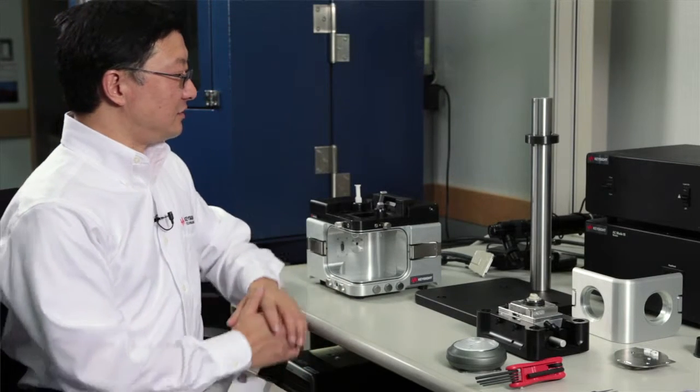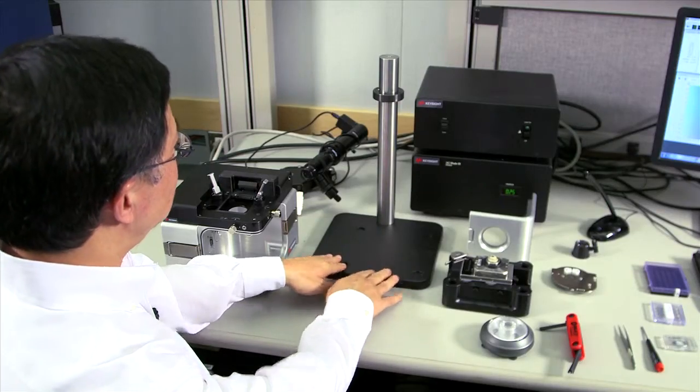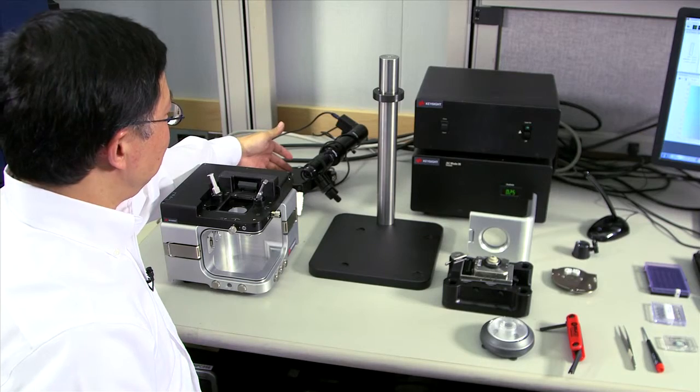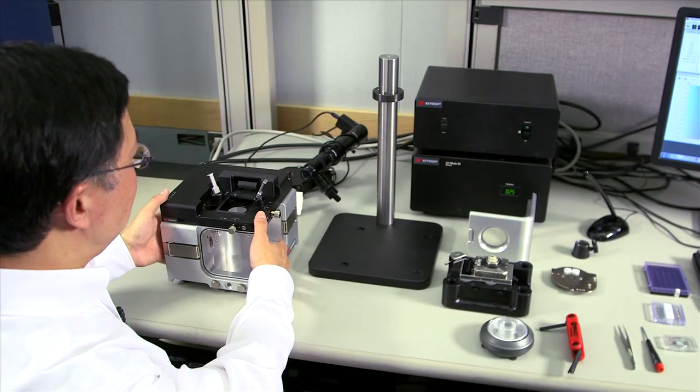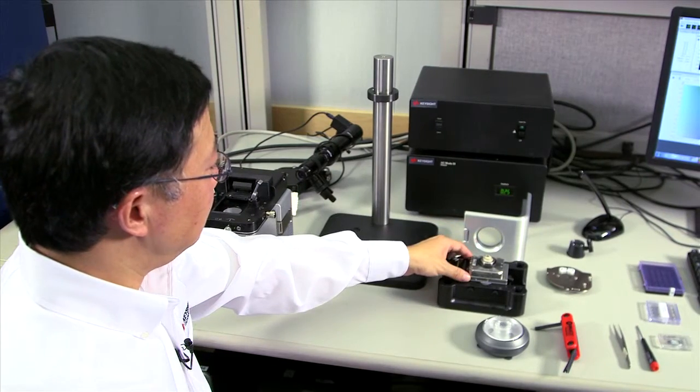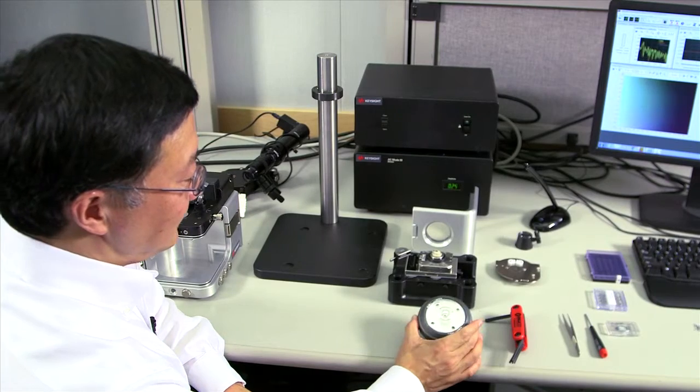Here's the basic component of the 7500 AFM. The base plate with its optical column, the optical microscope assembly, the AFM body, the gate, and the scanner. And here are some tools we need: Allen keys and an LED light.